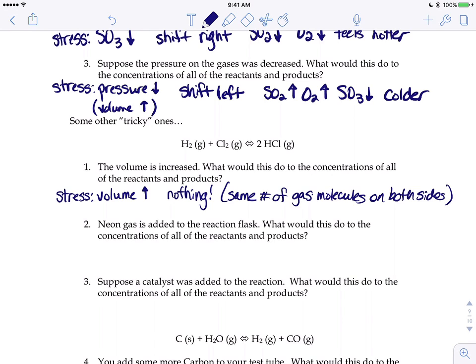In the second tricky example, it says you added neon gas to the reaction flask. Sounds like it should do something, right? But if you remember, neon gas is a noble gas—it doesn't react with anything. So that neon gas isn't going to react with your hydrogen, it's not going to react with the chlorine or the hydrochloric acid. So if there's no reactions taking place and you're putting that gas in that flask, nothing's going to happen. It doesn't disrupt your equilibrium because it doesn't do anything to the hydrogen, chlorine, or hydrochloric acid.